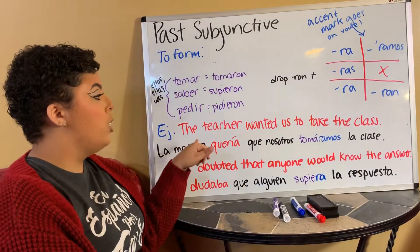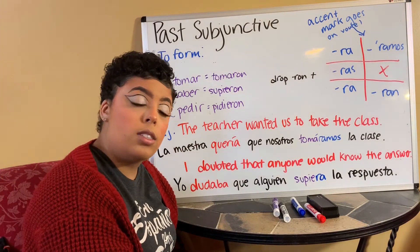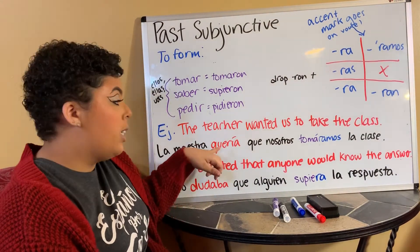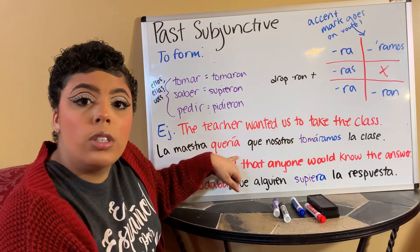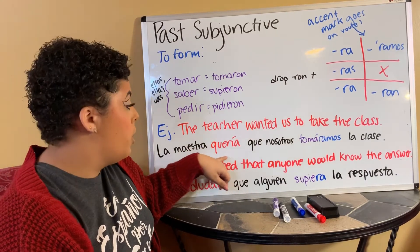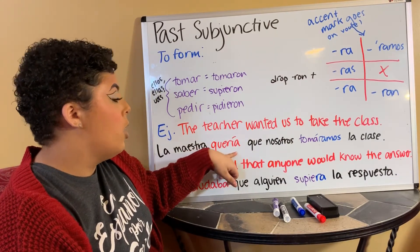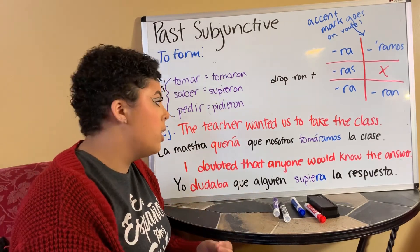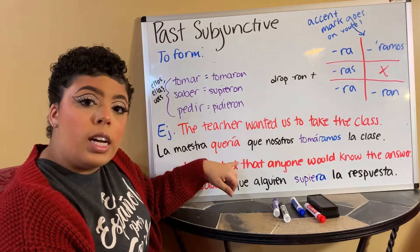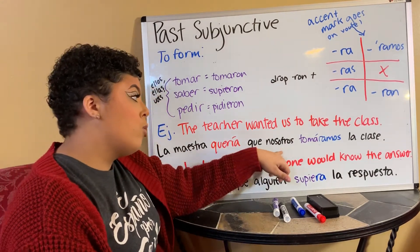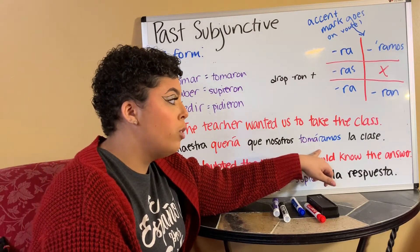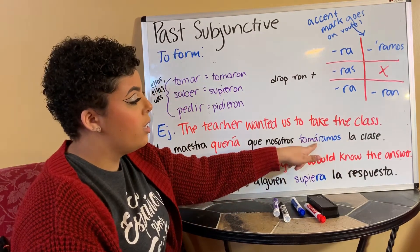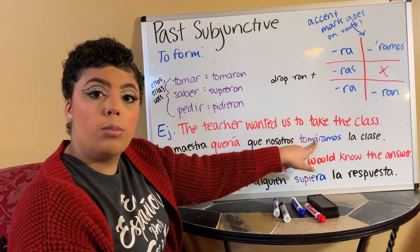So, the teacher wanted us to take the class: la maestra quería — notice that this is an imperfect verb here. We have our imperfect for the beginning of our sentence because it did happen in the past. So: la maestra quería que nosotros tomáramos la clase. Don't forget that accent over your vowel right before.